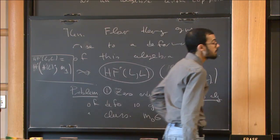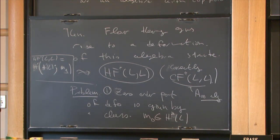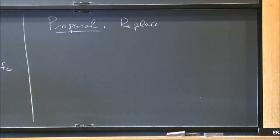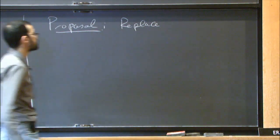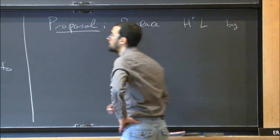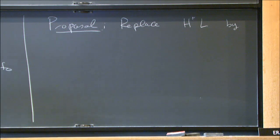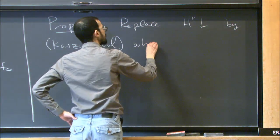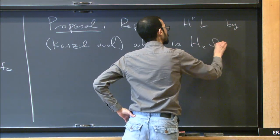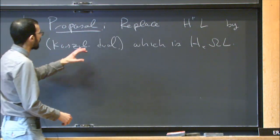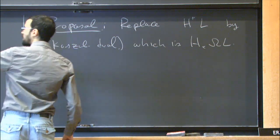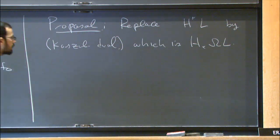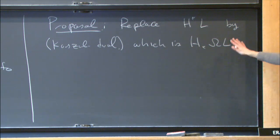This talk is about a proposal: to replace the cohomology of L by another algebra — specifically, the Koszul dual algebra, which is the homology of the based loop space. This is version 0 or version 0.5. Towards the end I will say something about what I believe is an even better story.